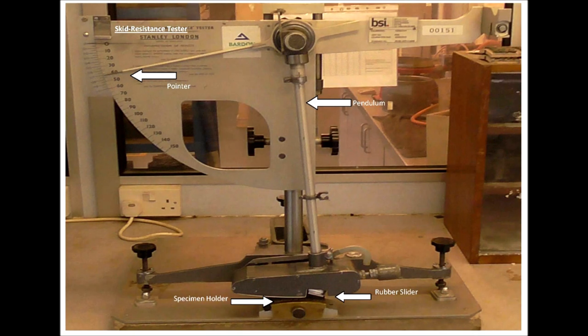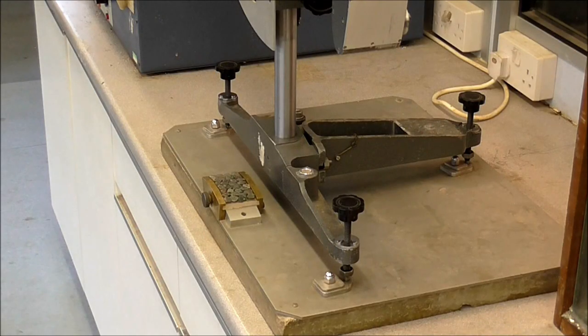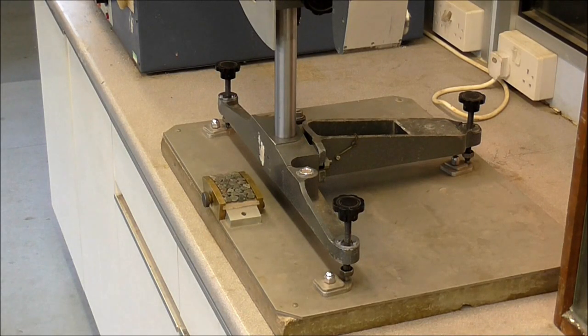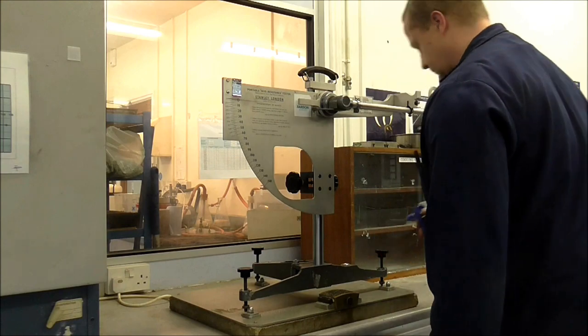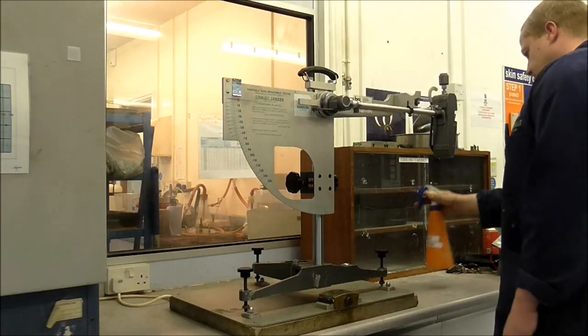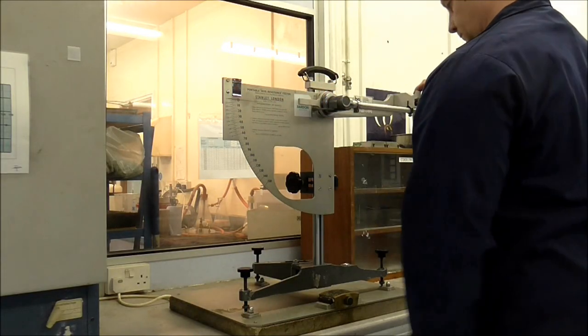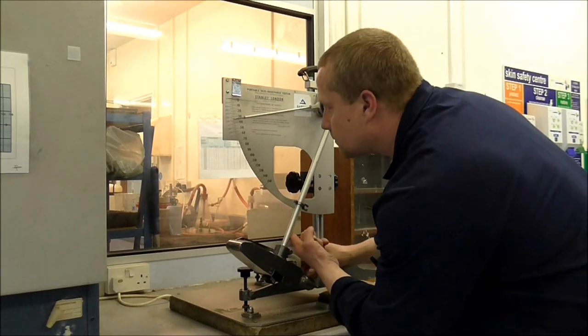The higher the number, the better the skid resistance. All specimens are subjected to five swings, each time recording the value. The values from the first two swings are discarded and the mean is taken from the last three swings.